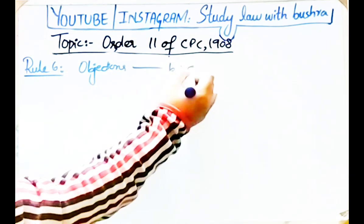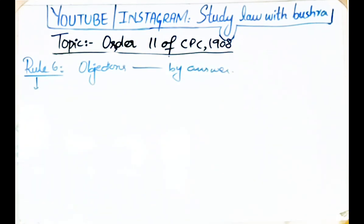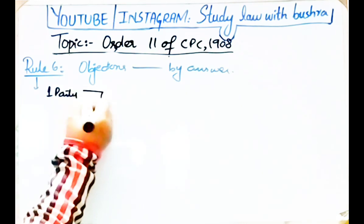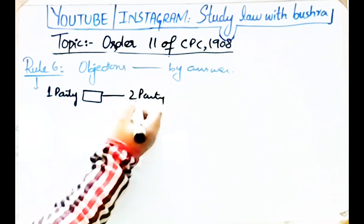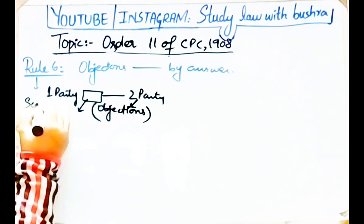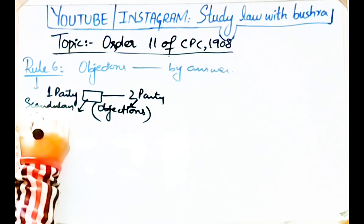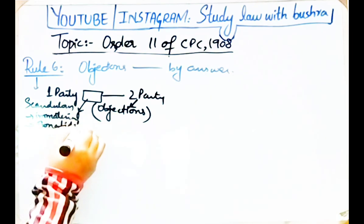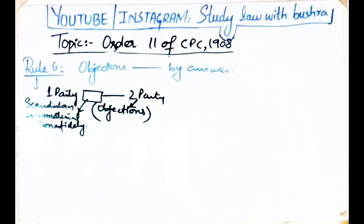Rule 6 baat karta hai objections to interrogatories by answer. Any objection to answering any interrogatory on the ground that it is scandalous or irrelevant or not exhibited bona fide for the purpose of the suit, or that the matters inquired into are not sufficiently material at that stage, or any other ground, may be taken in the affidavit in answer. Yaani agar second party ko in interrogatories par kisi bhi tarah ka objection hai — chahe woh questions irrelevant hon, scandalous hon, ya suit se related na hon — woh party apna objection affidavit mein record karegi.